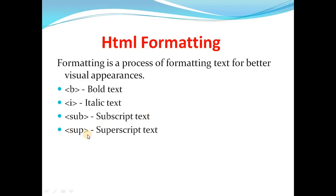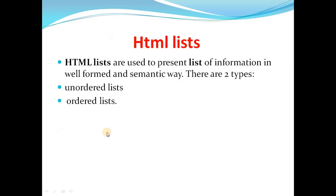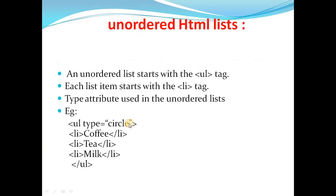Next comes the HTML list. A list is used to present a list of information in a well-formed and semantic way. There are two types of lists in HTML: unordered list and ordered list.